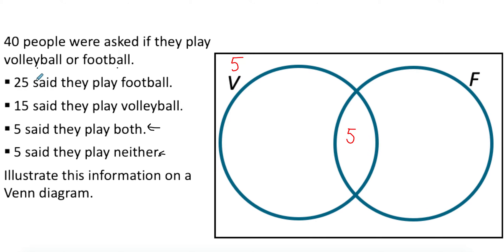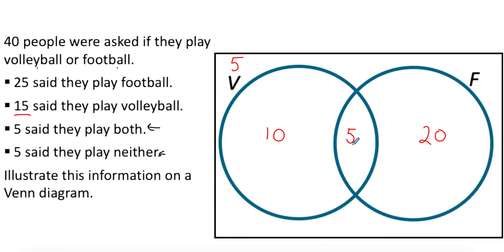Volleyball has 15 people, but you've already counted 5 in the intersection, so you're left with 10. The total of the volleyball circle is 10 plus 5, which is 15. The same for football: there are 25 people, but 5 are already in the intersection, leaving 20. If I add 20 plus 10 plus 5 plus 5, I get 40, which is my total number of people.